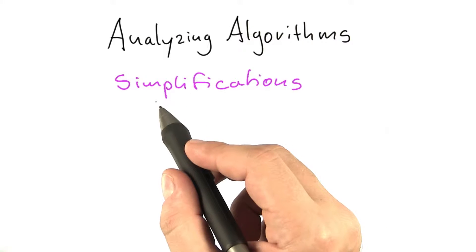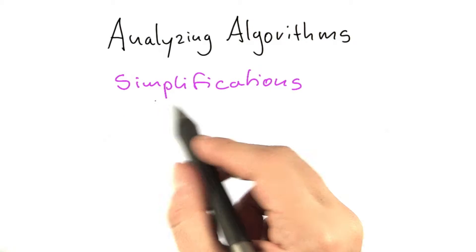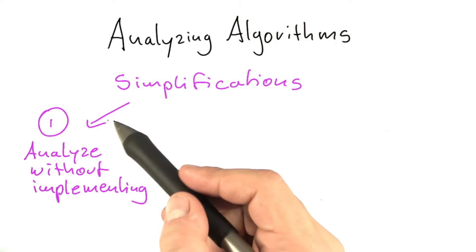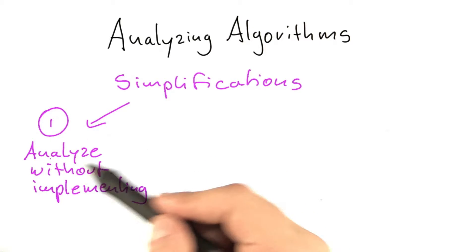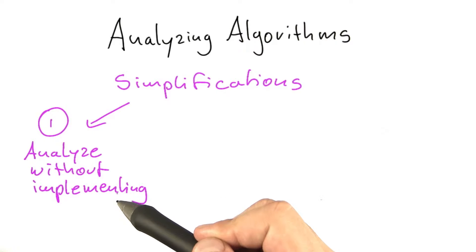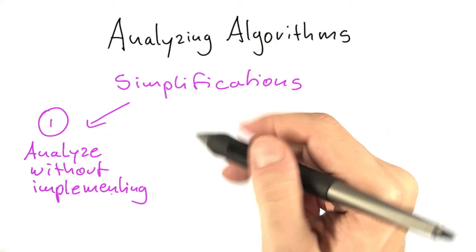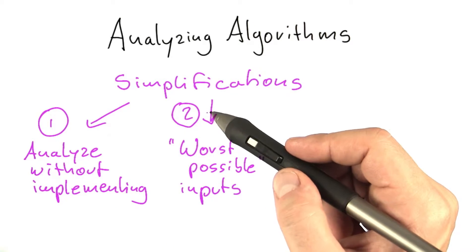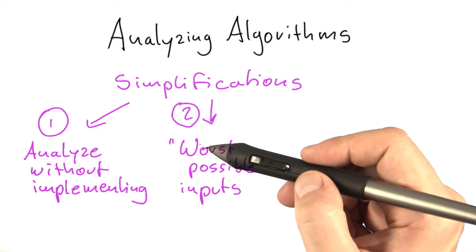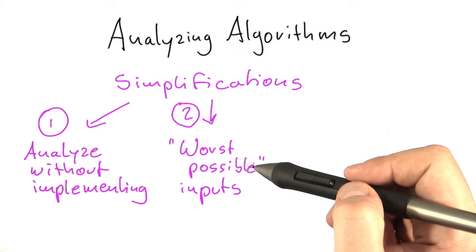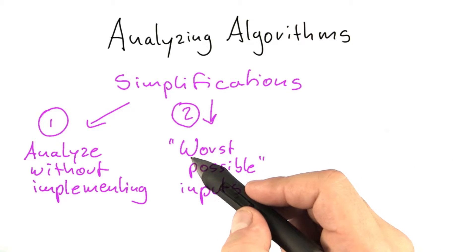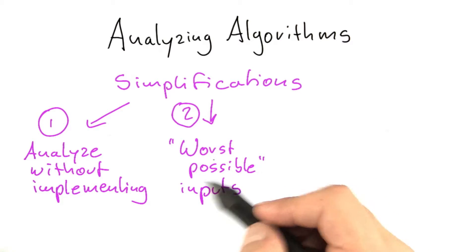There are three simplifications we'll introduce to make analyzing algorithms easier. The first is a way to analyze algorithms without actually having to implement them, which will save us a lot of time. The second simplification is that we're not going to consider all possible inputs an algorithm can be run on, but only the worst possible inputs.